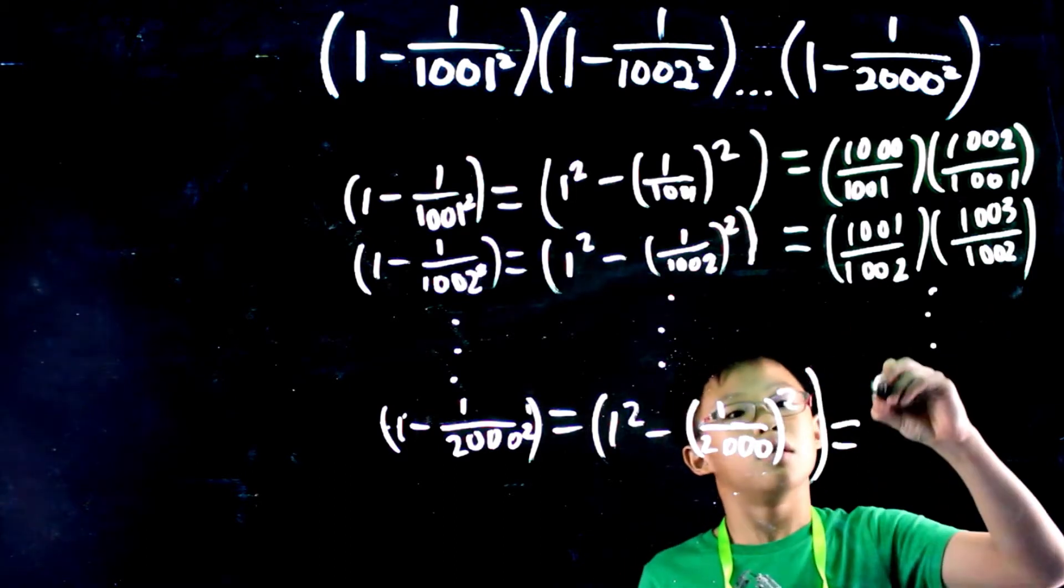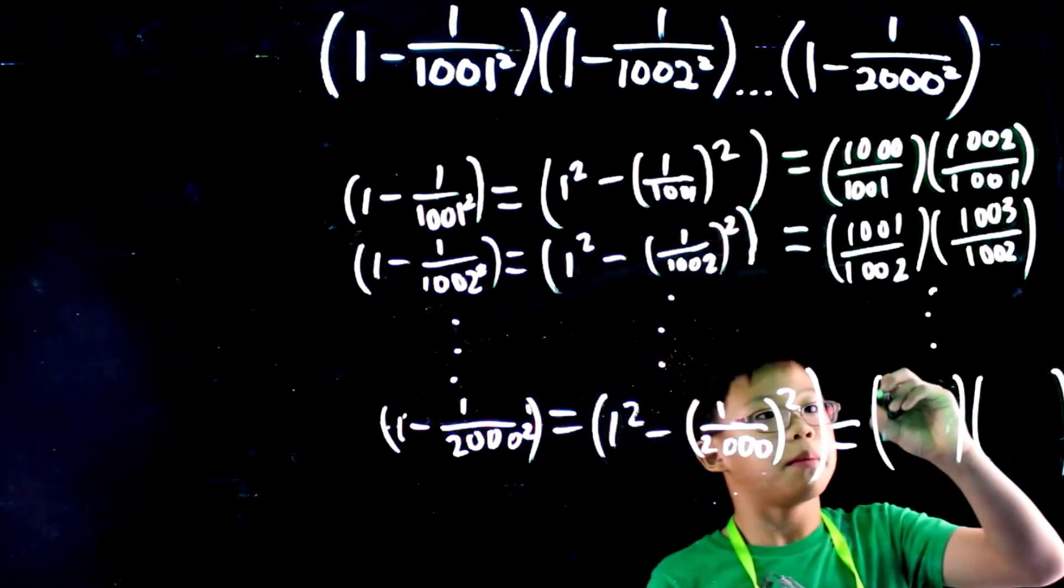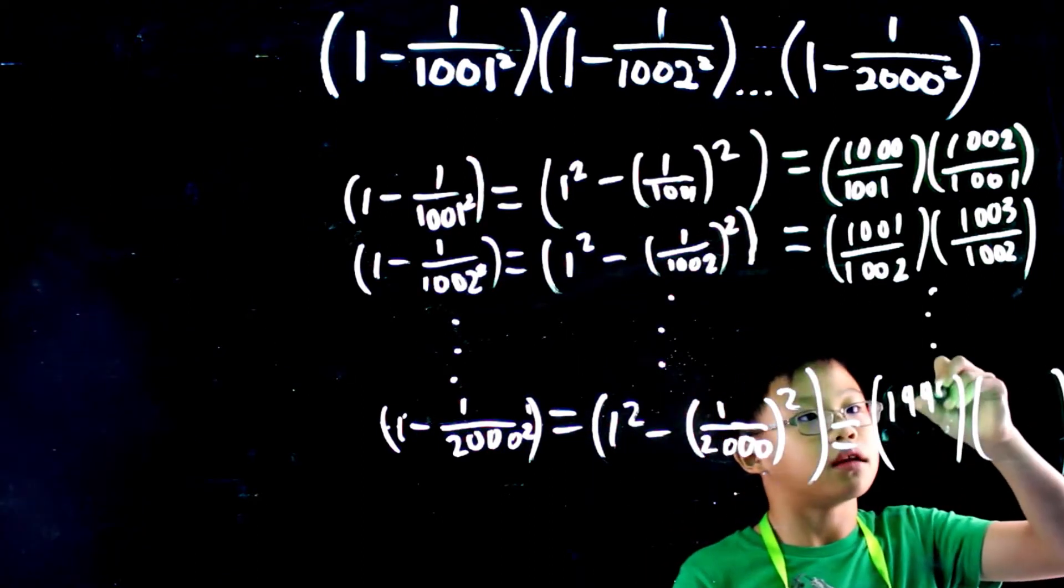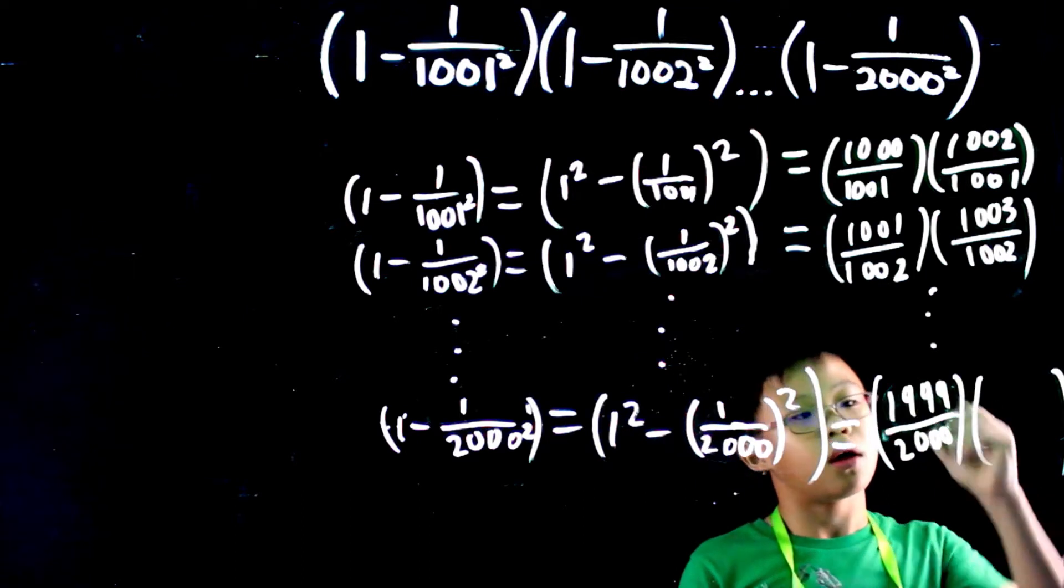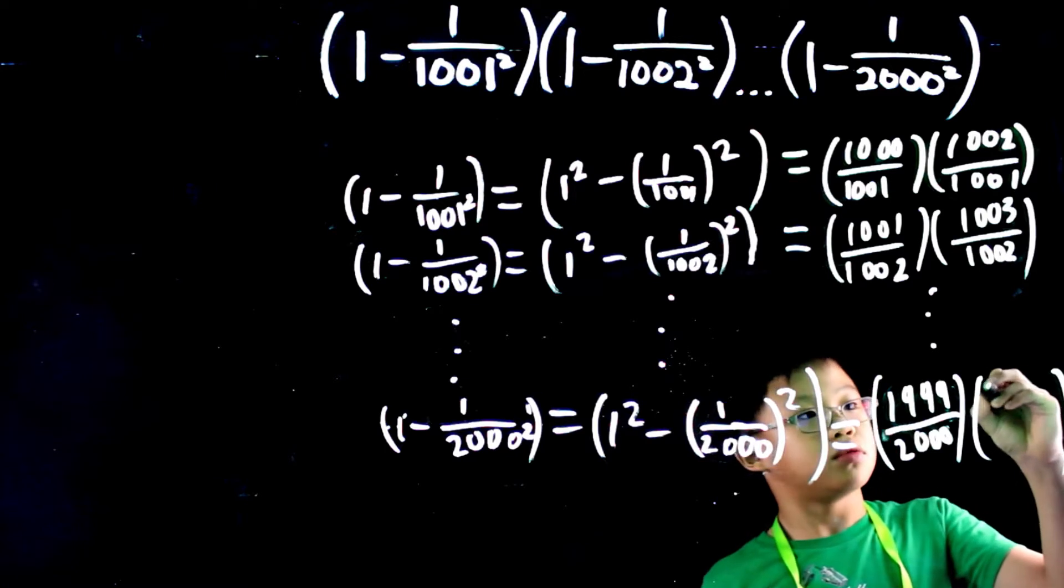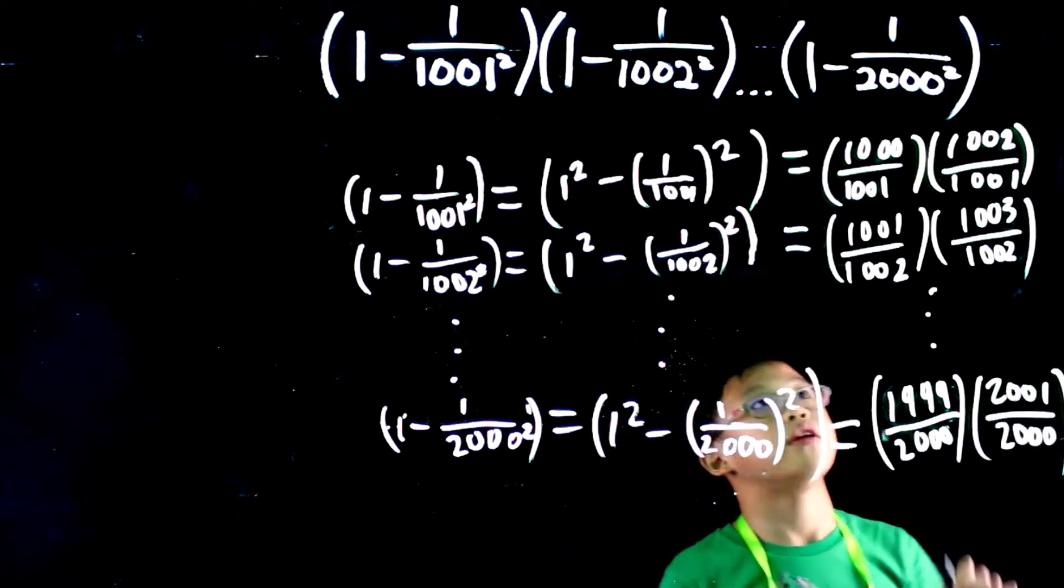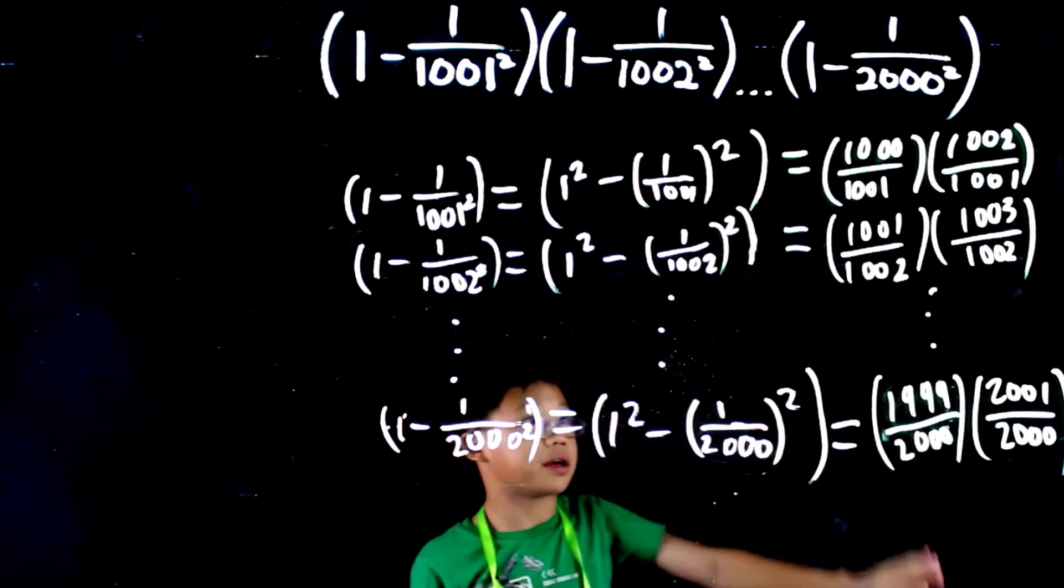So it is a minus b times a plus b. And a minus b is 1999 over 2000 times a plus b is 2001 over 2000. Now we have synthesized it to just these two fractions going all the way.